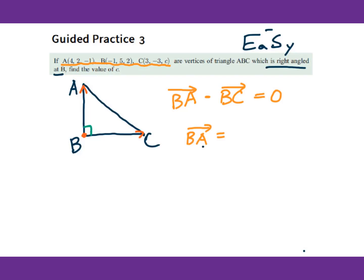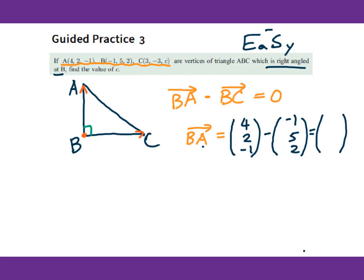Computing vector BA: A minus B gives us (4 minus negative 1, 2 minus 5, negative 1 minus 2), which equals (5, negative 3, negative 3). For vector BC, ending is C equals (3, negative 3, C), minus B equals (negative 1, 5, 2). Performing the subtraction, we get vector BC equals (4, negative 8, C minus 2).